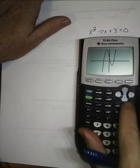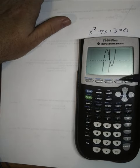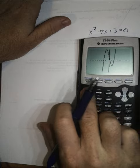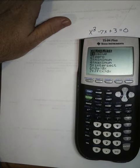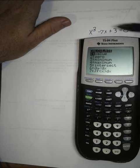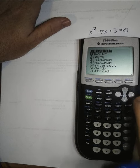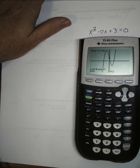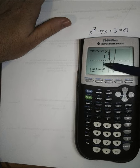To do this, we're going to use the calc function. So it's going to be second trace. So that'll get to the calculate menu. And we want to calculate a 0, we want to calculate when our expression is 0. So we arrow down to 0 and we hit enter. Now you notice that it's 0 three times. So we're going to help our calculator out and tell it which 0 we're looking for.